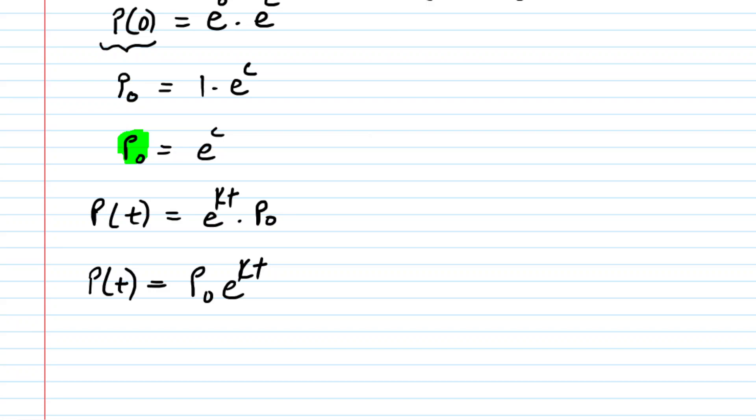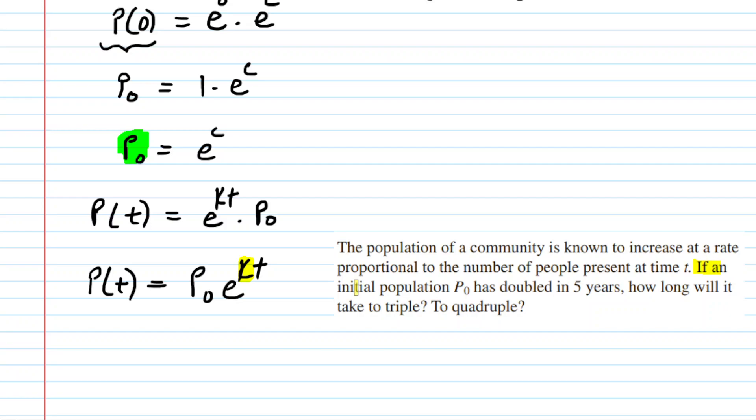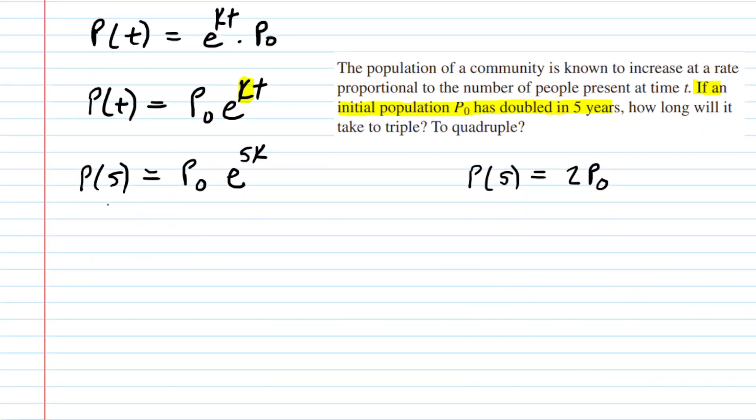Our next goal is to solve for the value of k. And to do that, let's go back and look at the question. We note that the initial population doubled in five years. So symbolically, we could say that P(5) is equal to twice the initial population. So back into our equation, we would plug five in for t. So we're going to end up in the exponent with, you could say k times five, but it might look nicer if we just said 5k. And then this P(5) is equal to twice the initial population.